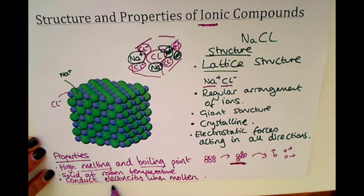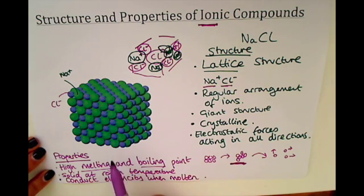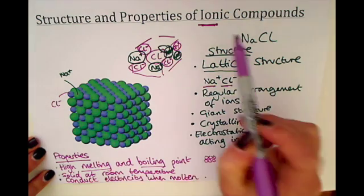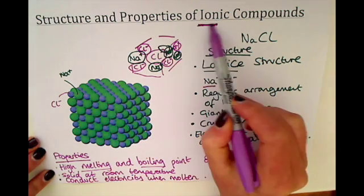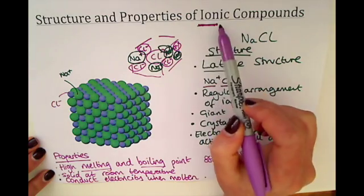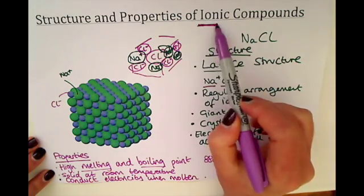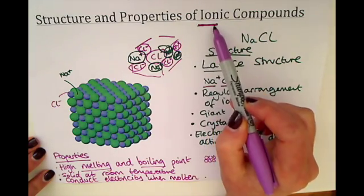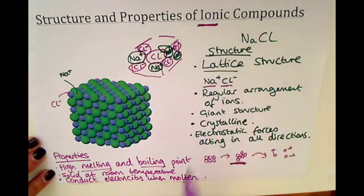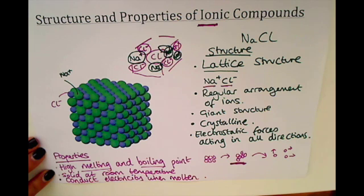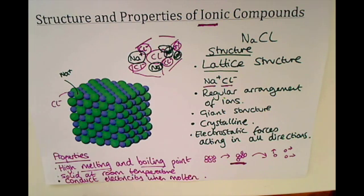For electricity, you need a flow of charge. In an ionic compound you have ions which are charged, so when they are allowed to flow you can conduct electricity — but you can't do so when it is a solid.